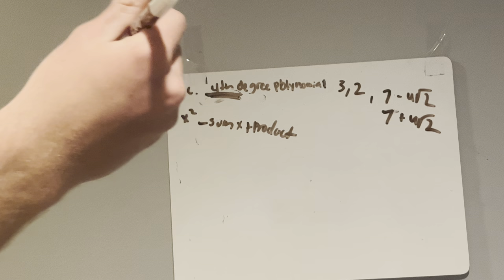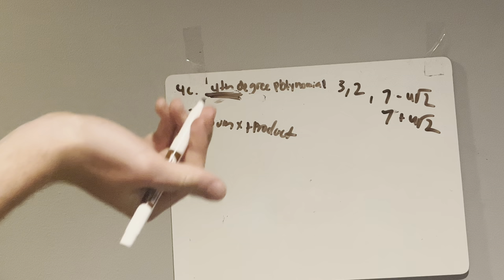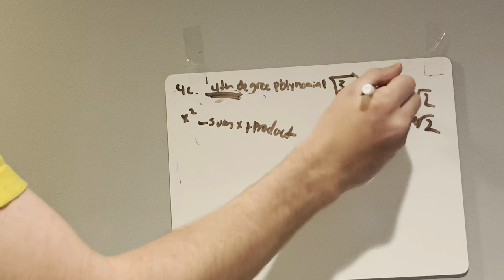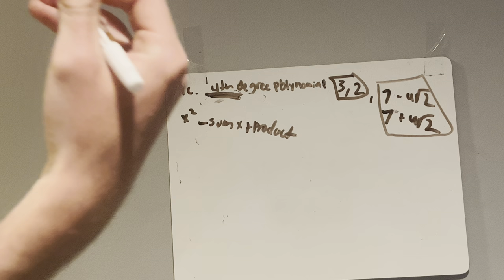Now we group roots together and plug them into this formula. In order to select which roots we're pairing together, I like to choose the numbers that are most similar. 3 and 2 are both positive integers, so I'm choosing them. And 7 minus 4 radical 2 and 7 plus 4 radical 2 both contain a radical, so those should be grouped together.